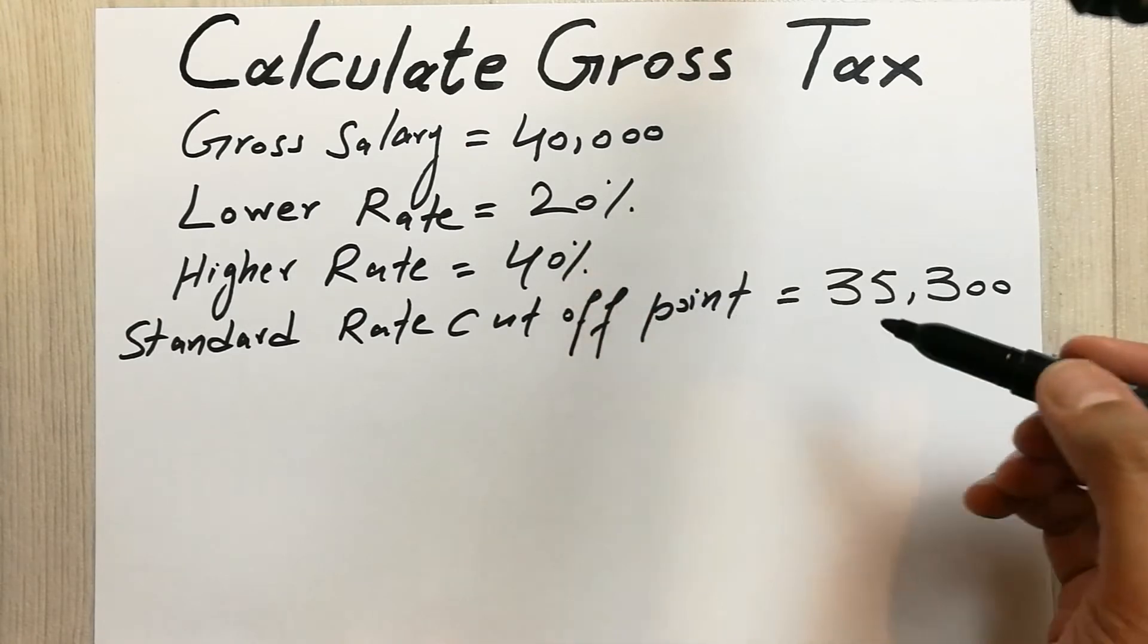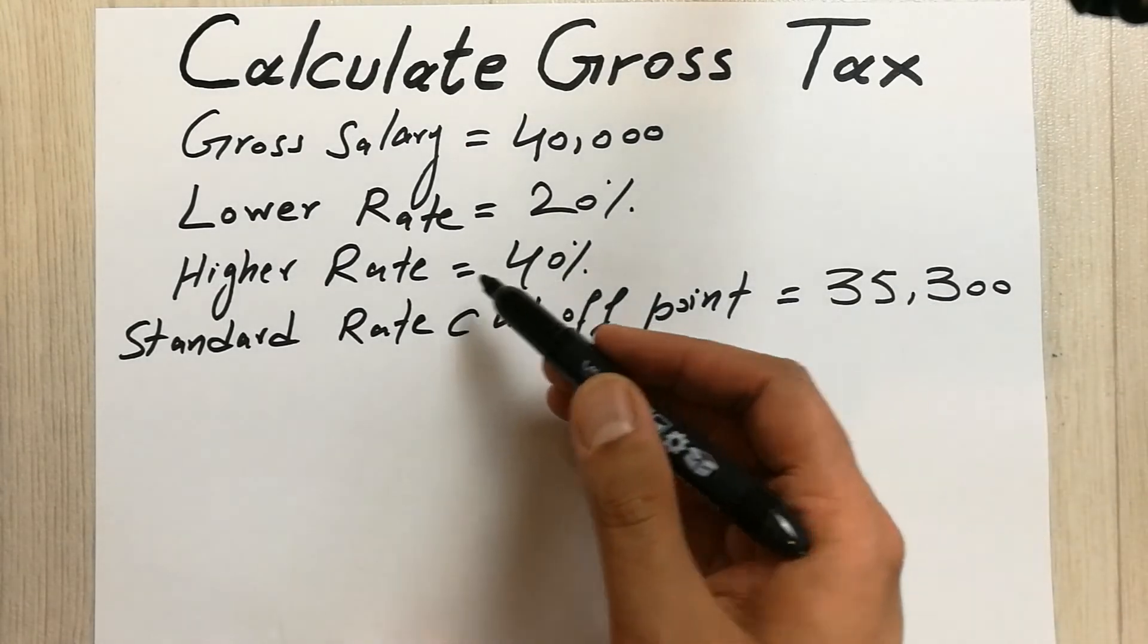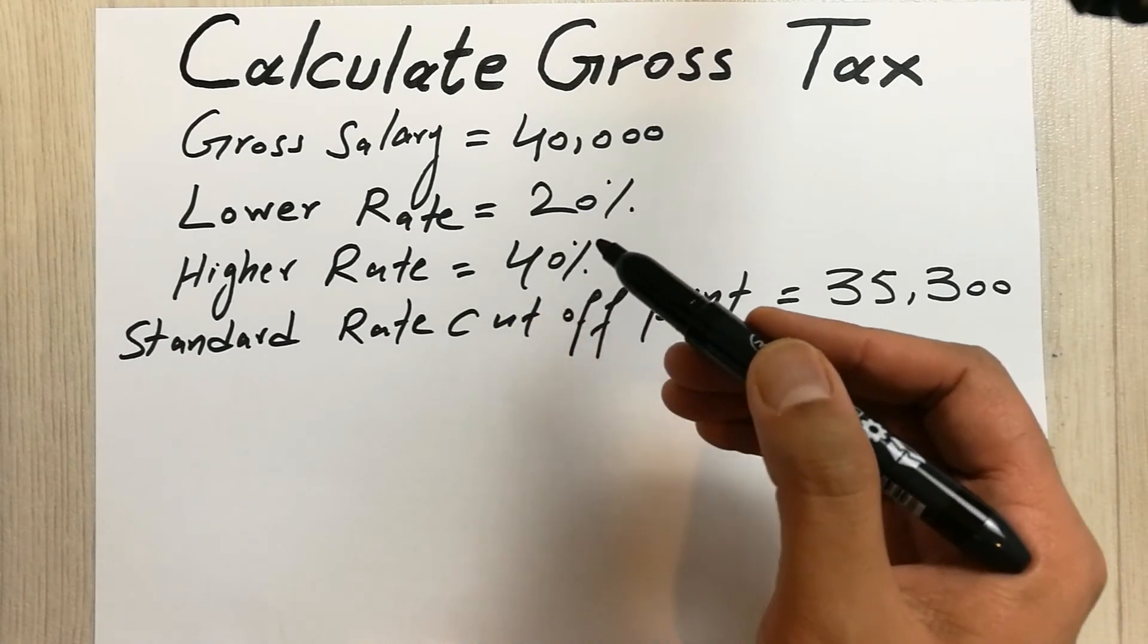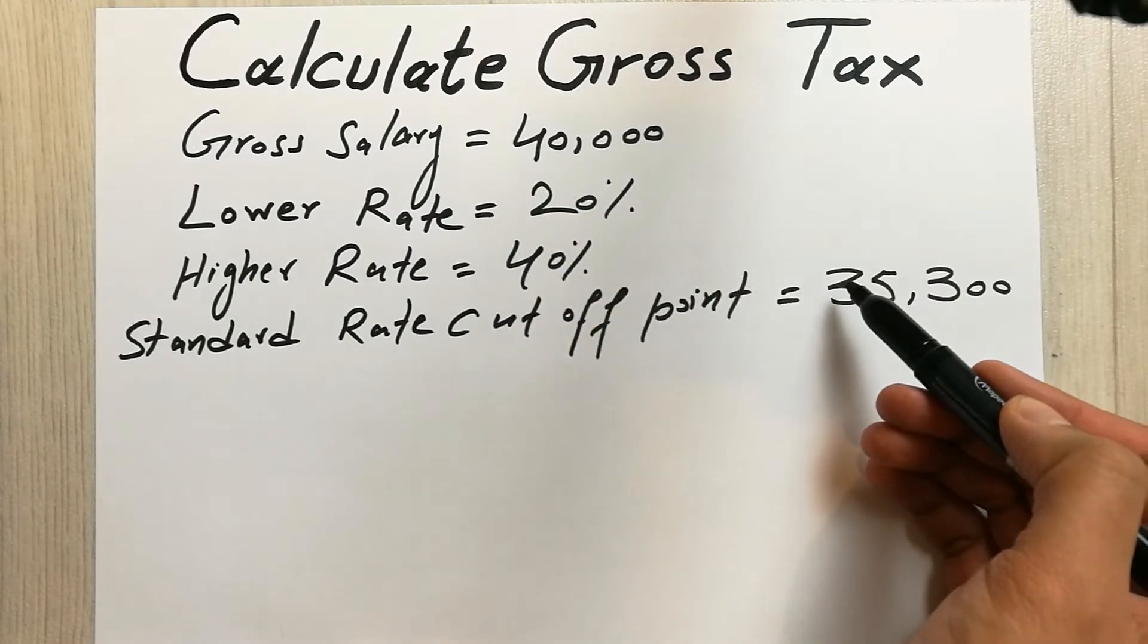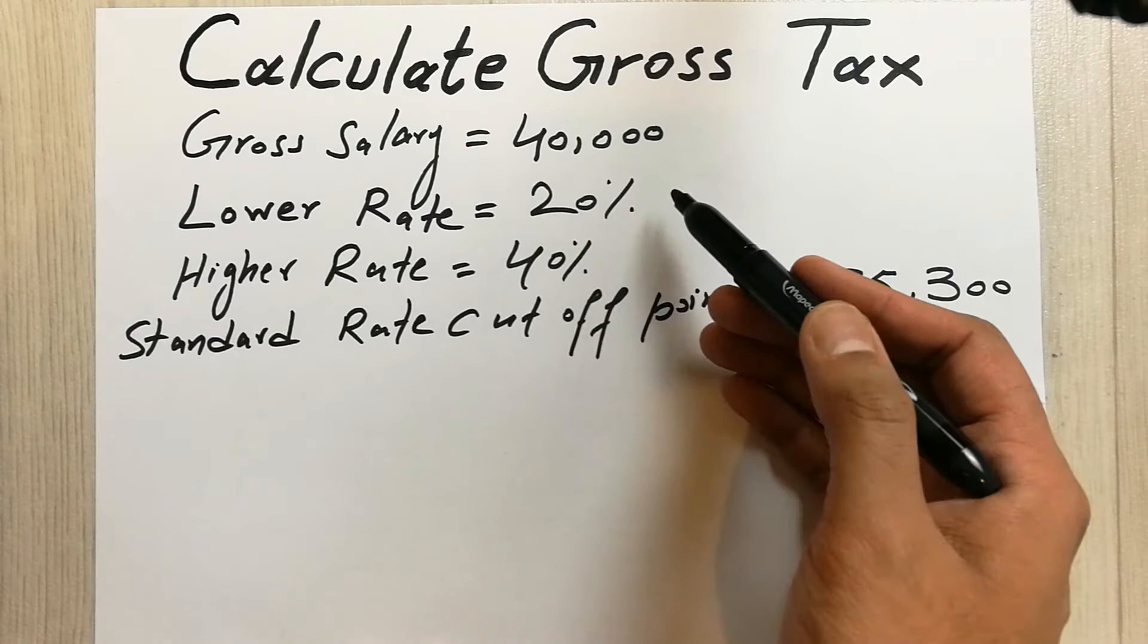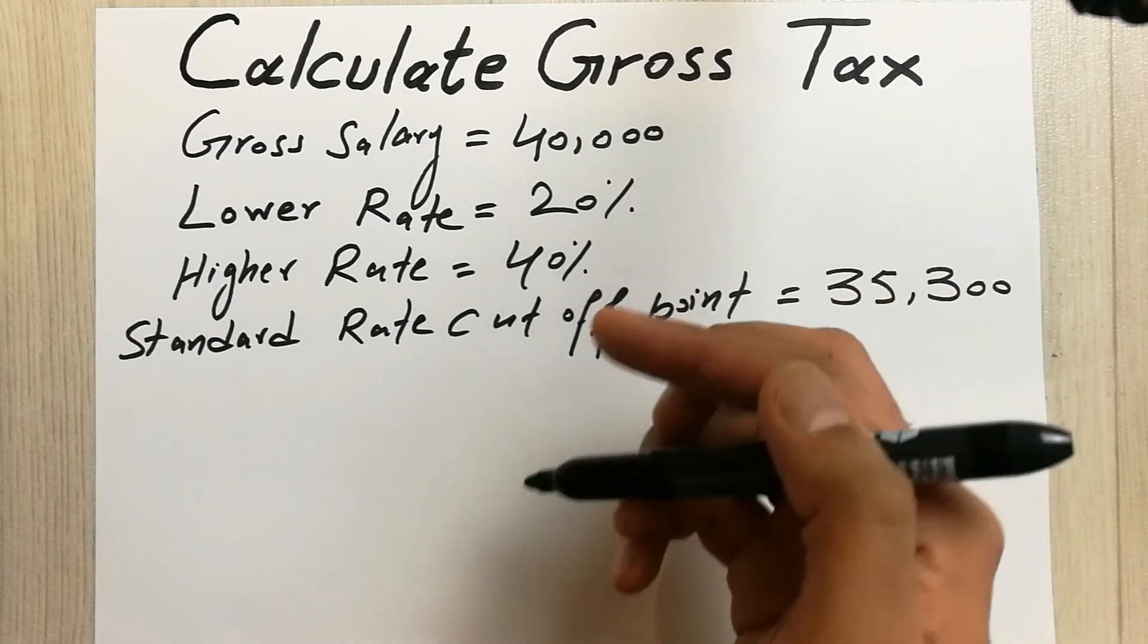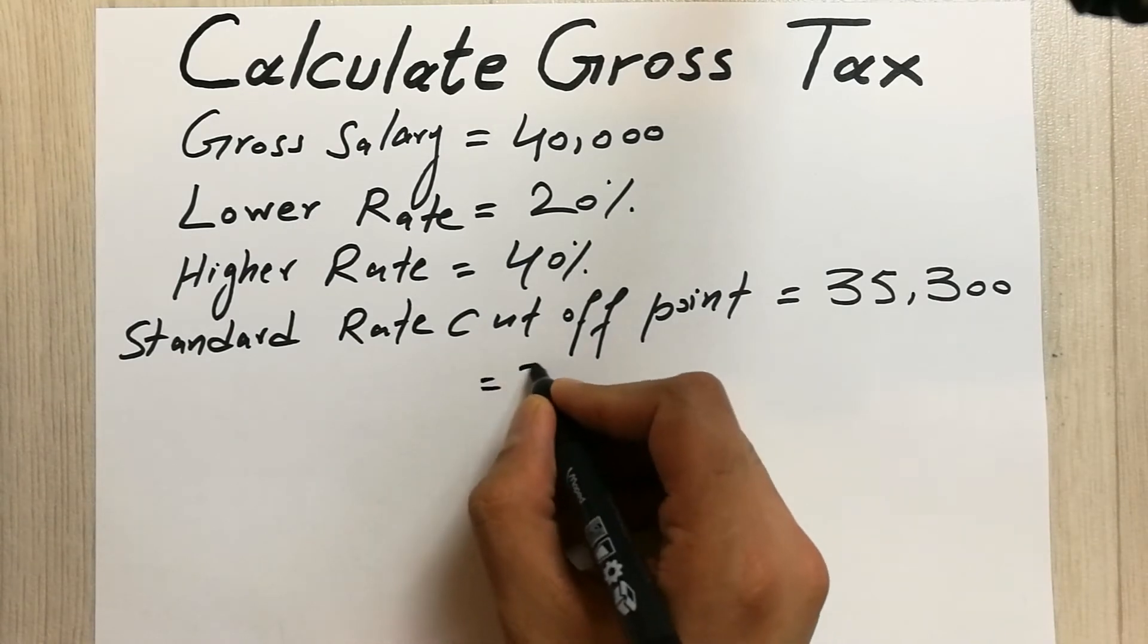If it is above 35,300 then the higher rate 40% will apply. But because we have a gross salary here which is 40,000, which is above this point, it doesn't mean that we simply multiply it with 40%. We have to go through a two-step process.